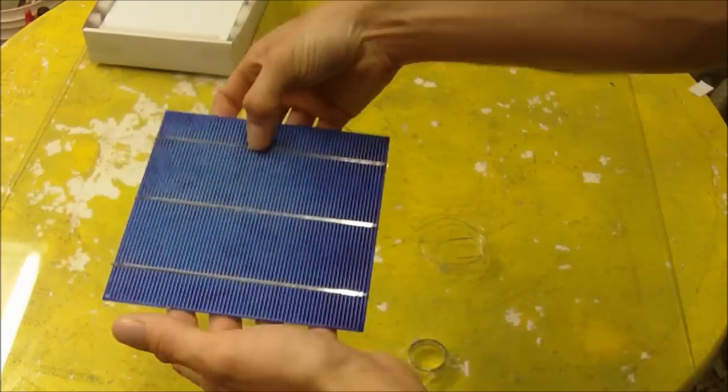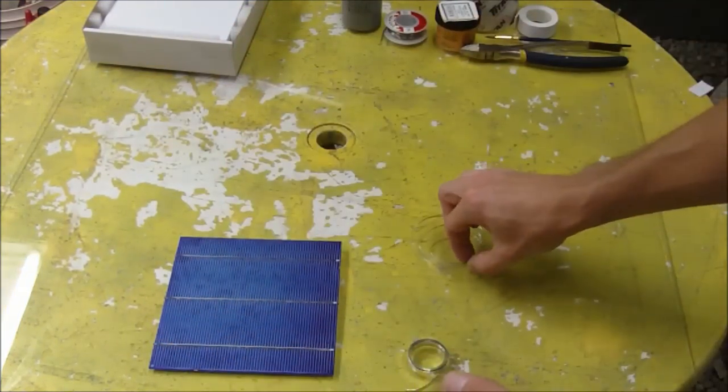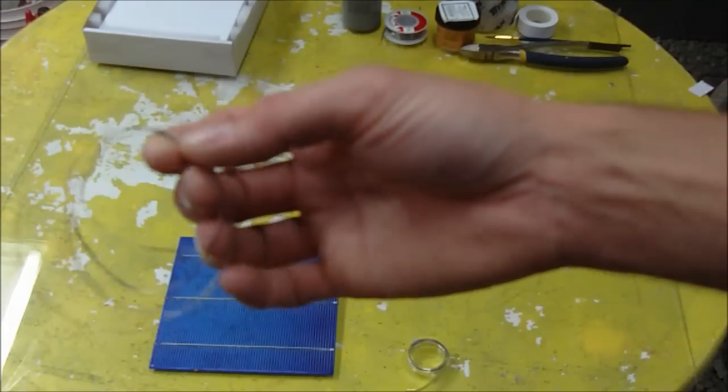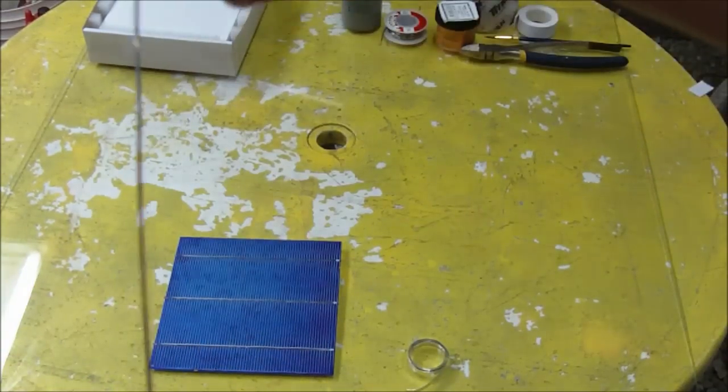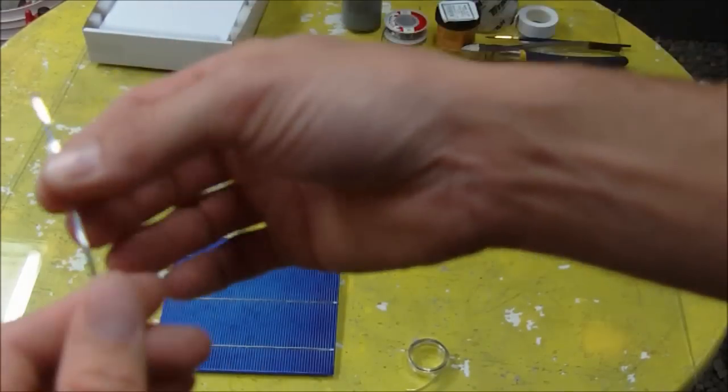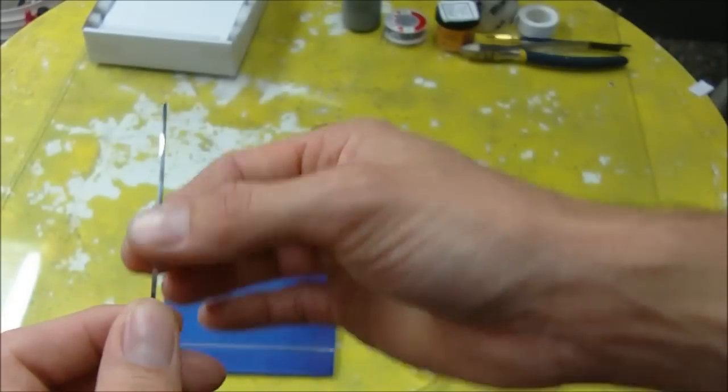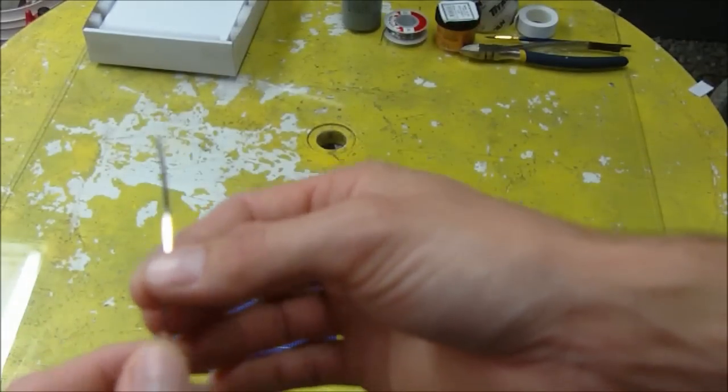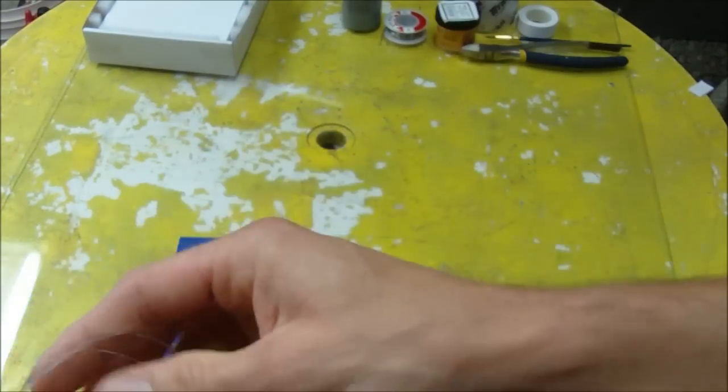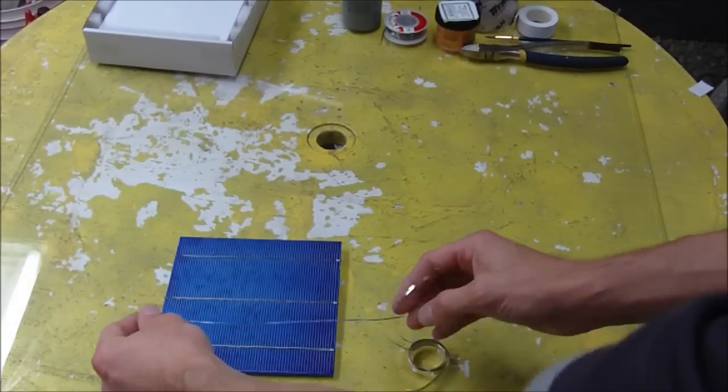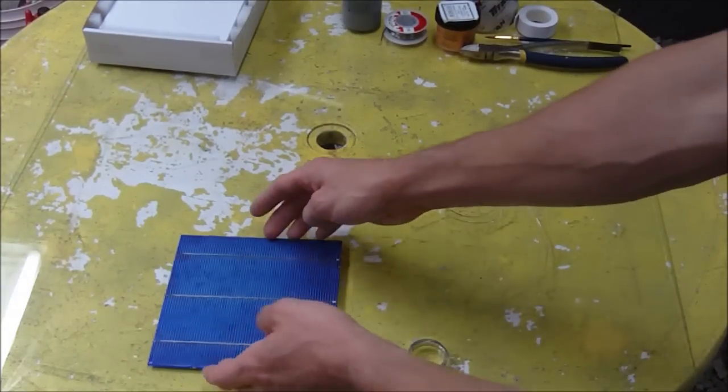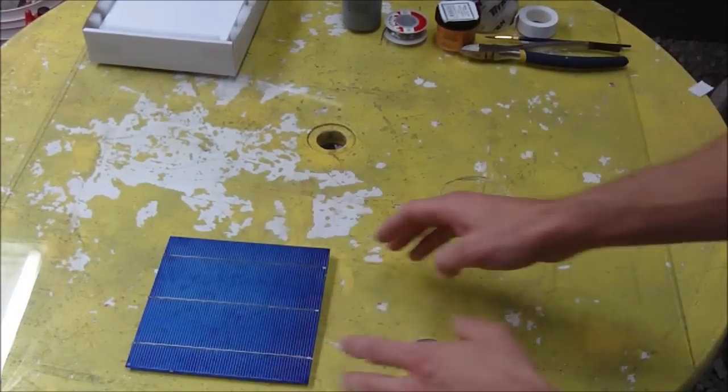You will also have some wire. This wire here is called tabbing wire, and it's a flat wire which has solder - some of it has solder on it and some comes without solder. This wire is what connects your cells together. This connects the negative sunny side to the positive side of your next cell.